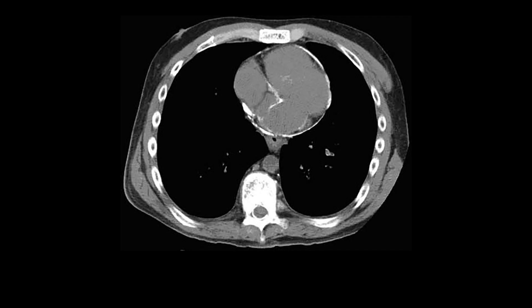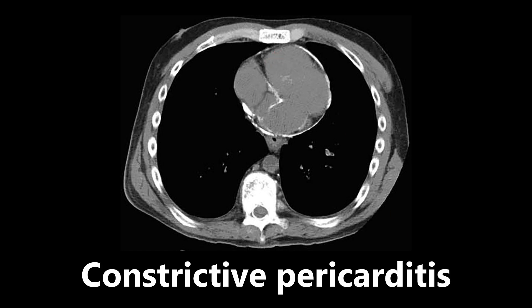Here we have a CT scan. If you look carefully, you can appreciate that the heart is sitting very tightly in the pericardium, and the pericardium is lit up with white around it. This is an example of constrictive pericarditis. There's calcification on the outer rim of the pericardium — it looks the same color as bone — and there's very little space for the heart, which is abutting right up against it. This is constrictive pericarditis.